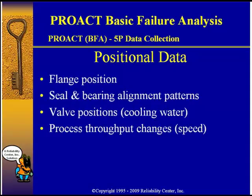Positional data might include those flange positions we mentioned — let's see how far they are misaligned and whether that has an effect on these seal failures. We also want to look at seal and bearing alignment patterns when we inspect the parts. We want to look at valve positions, especially the cooling water — whether the valve to the mechanical seal is completely open or partially open. We should also look at process throughput changes: if we increased processing speed or have any process variations that changed, we should check that.